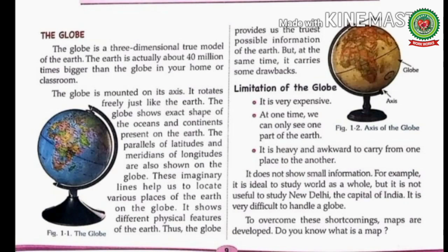Next, we will read the limitation of the globe — the disadvantages of the globe. First, it is very expensive — means costly. At one time, we can only see one part of the earth. It is heavy and awkward — means difficult — to carry from one place to another. It does not show small information; for example, it is ideal to study the world as a whole, but it is not useful to study New Delhi, the capital of India. It is very difficult to handle a globe. To overcome these shortcomings, maps are developed.